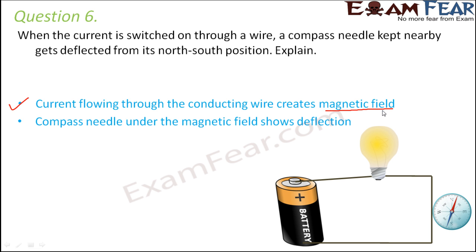The current flowing through the conductor creates magnetic field. Compass needle under the magnetic field shows deflection. Why it shows deflection? Because the needle itself is a tiny magnet.